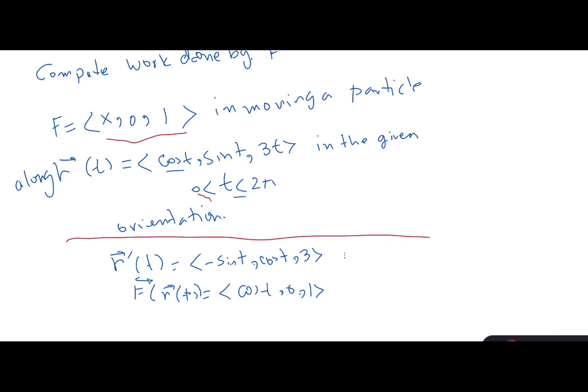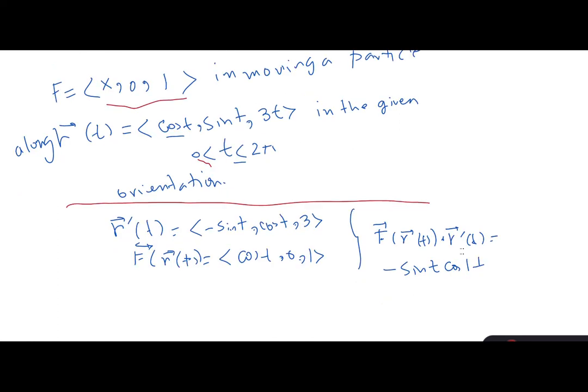Now the dot product will give me F of R of T dot R prime of T. This equals negative sine of T times cosine T plus 3, which is actually equal to negative sine of 2T divided by 2 plus 3.